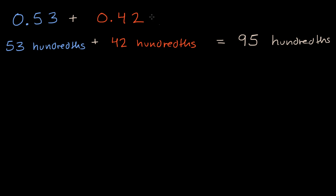So it's going to be 95 hundredths. And if I wanted to write that as a pure number, I would write that as 0.95, which I could read as 95 hundredths, or nine-tenths and five-hundredths.